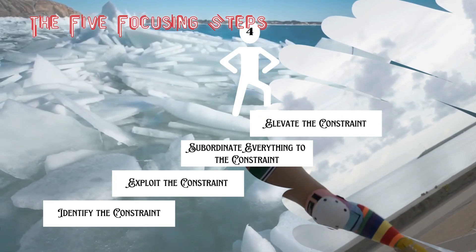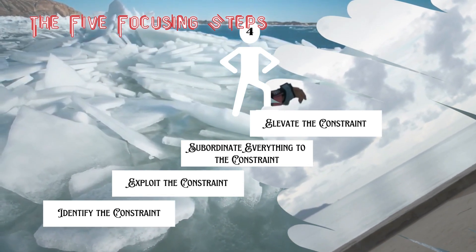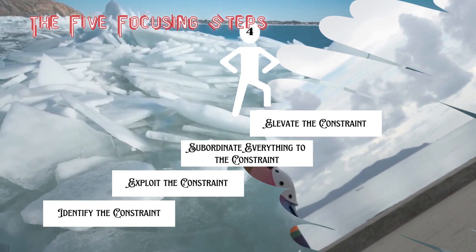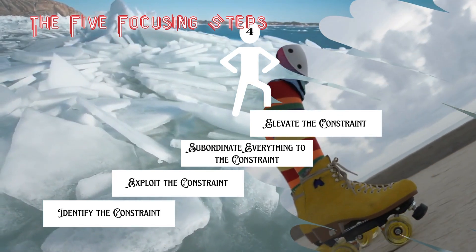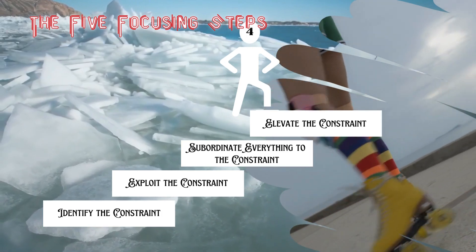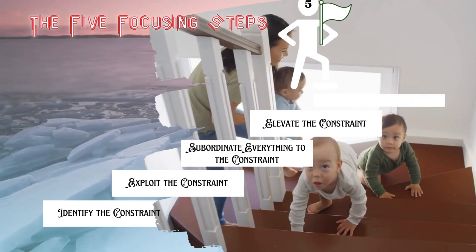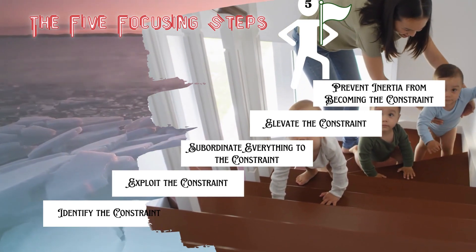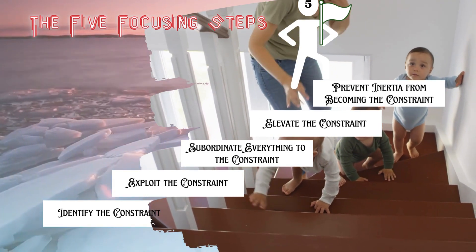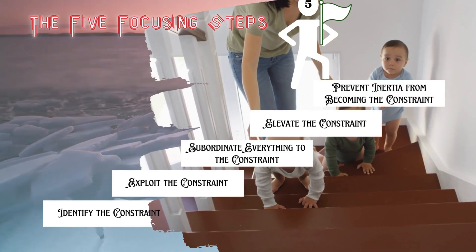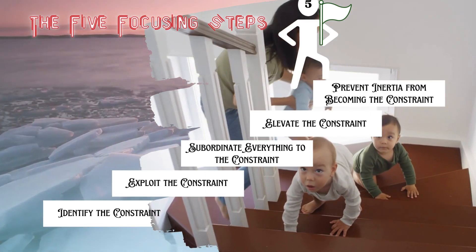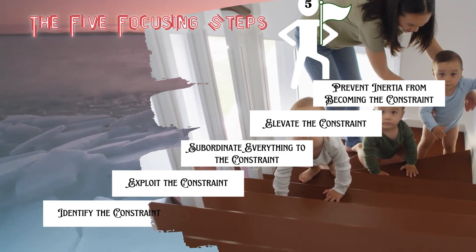The fourth step is to elevate the constraint. In the previous two steps, we tried to get the maximum out of the constraint using internal sources without any additional investment. Once we have made the necessary effort to bring the optimum out of available things, we then focus on additional investment that could support the constraint to do better. The last step is to prevent inertia from becoming the constraint — that is, after making effort to elevate one constraint, there is always a possibility of finding a new one. The Theory of Constraint is not a one-time process; it is a tool for continuous improvement. That is why it is known as Process of Ongoing Improvement.